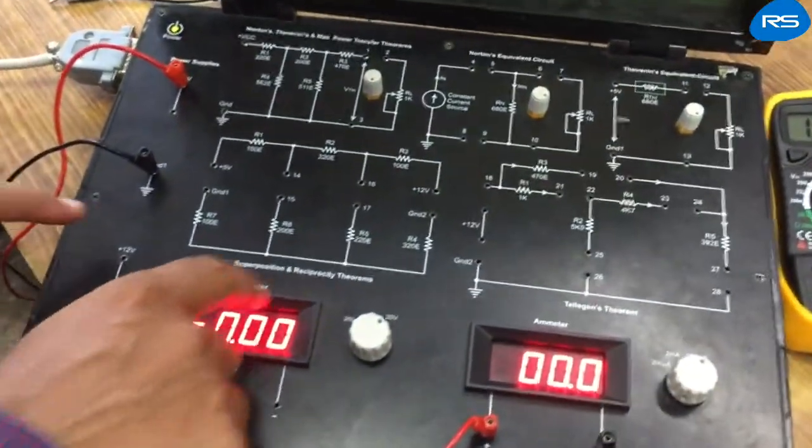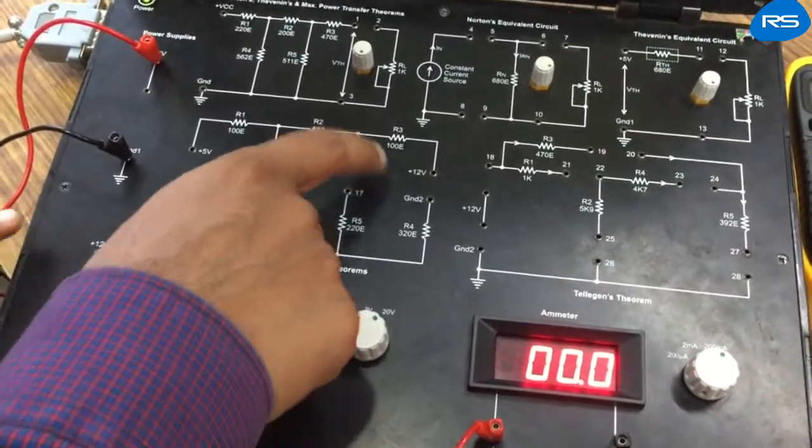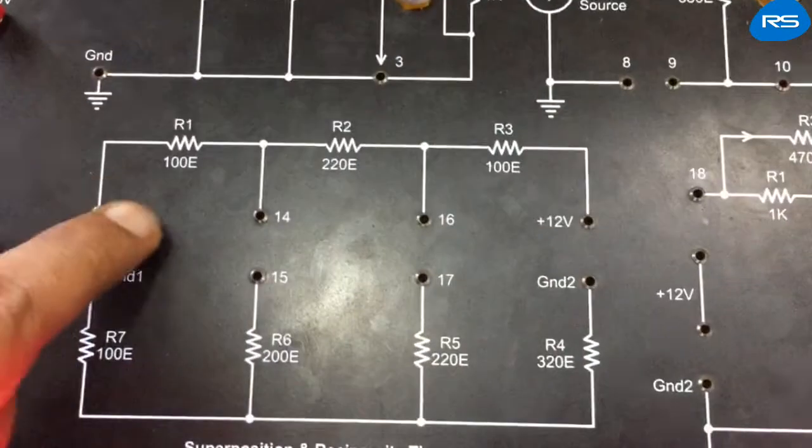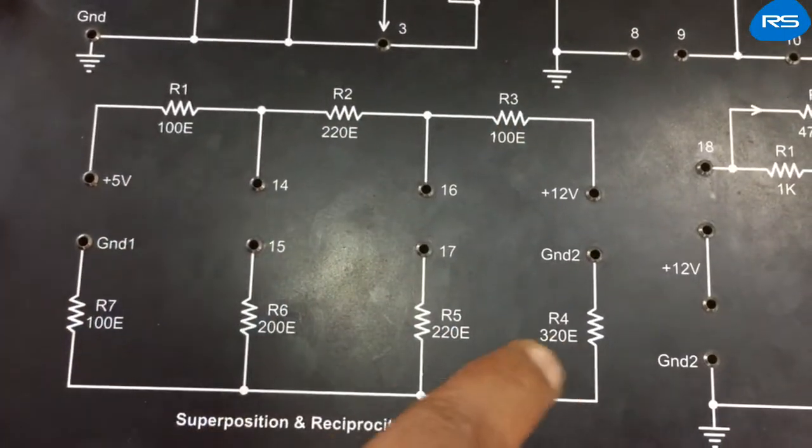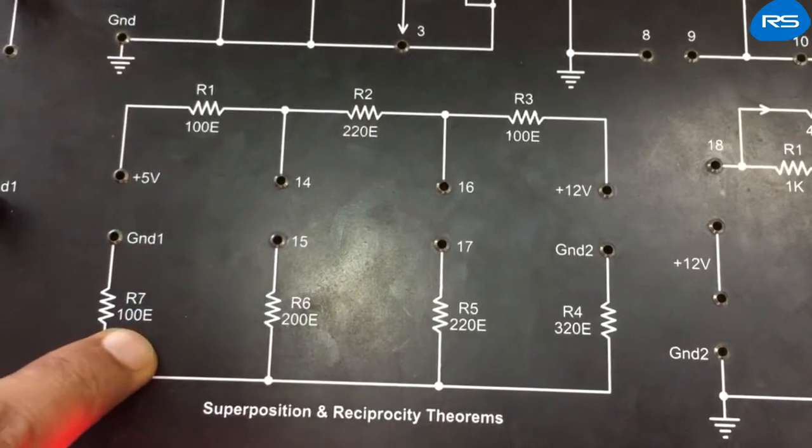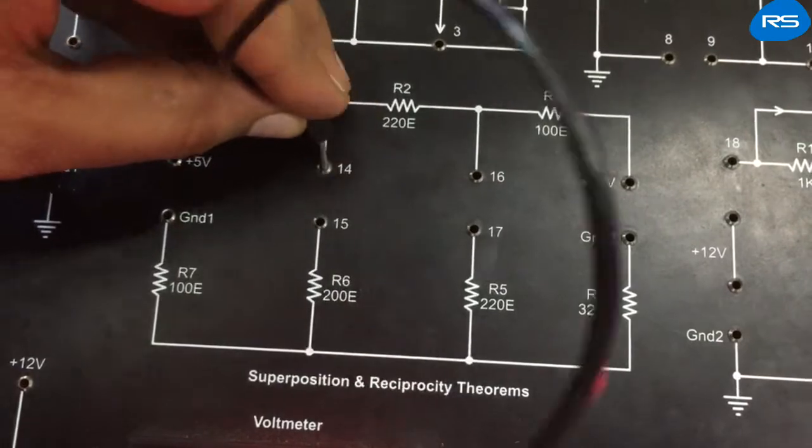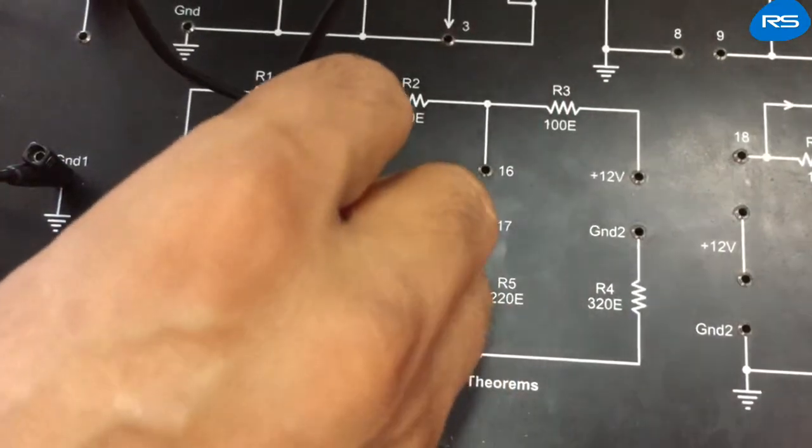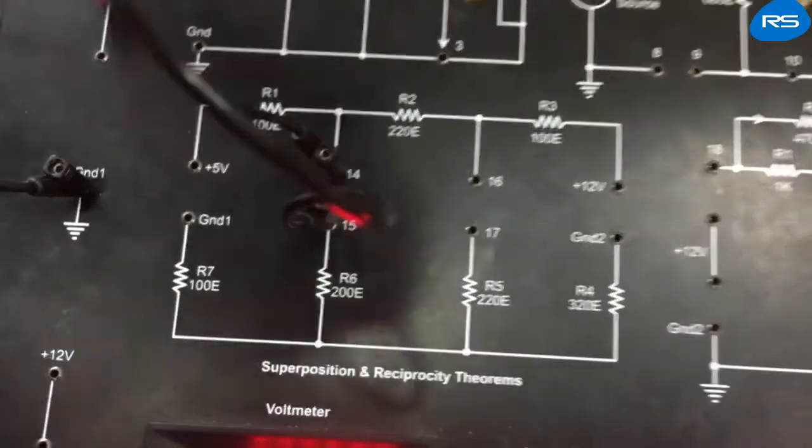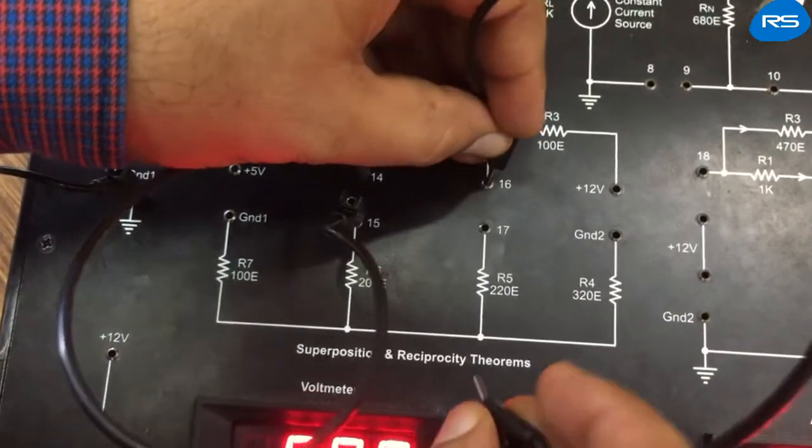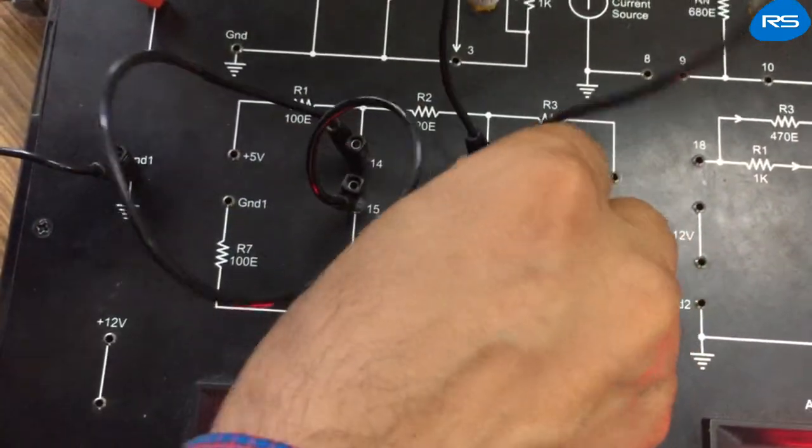In this kit we have a circuit having resistances R1, R2, R3, R4, R5, R6, and R7. We will put a short circuit between points 14 and 15 with the help of a patch card, and points 16, 17 are also shorted.